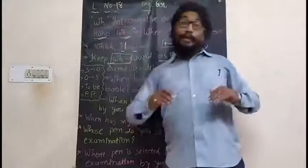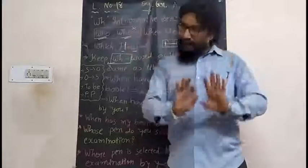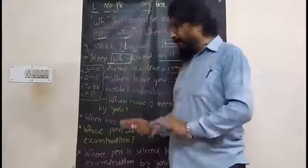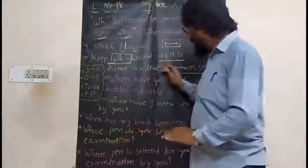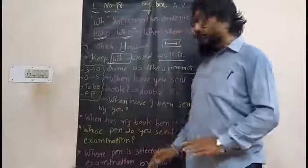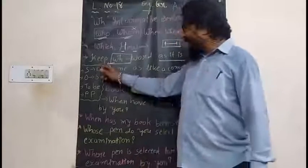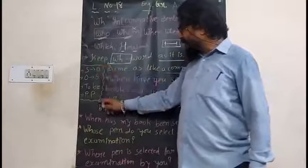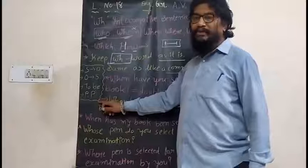The structure for WH interrogative sentence is: keep the WH word as it is, and next to that follow S2O to S2B and BP. This is the basic fundamental rule we have to follow. From the first day onwards, the same thing I have been writing, and today also I have written the same thing here in front of you.